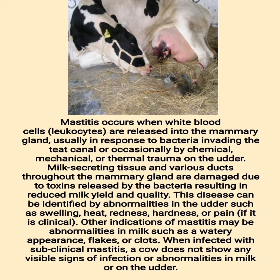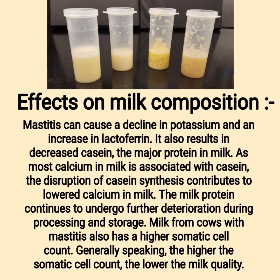This disease can be identified by abnormalities in the udder such as swelling, heat, redness, hardness, or pain if it is clinical. Other indications of mastitis may be abnormalities in milk such as a watery appearance, flakes, or clots. When infected with subclinical mastitis, a cow does not show any visible signs of infection or abnormalities in milk or on the udder.